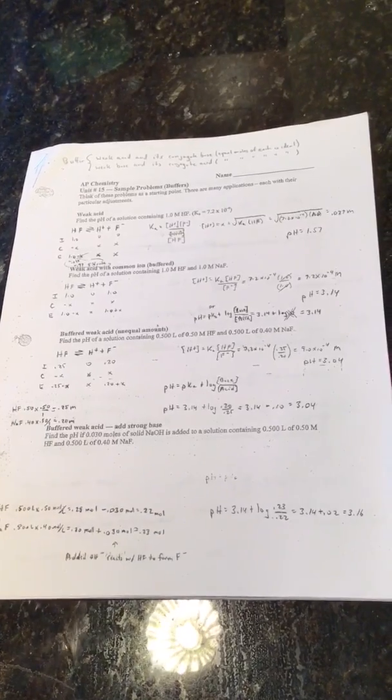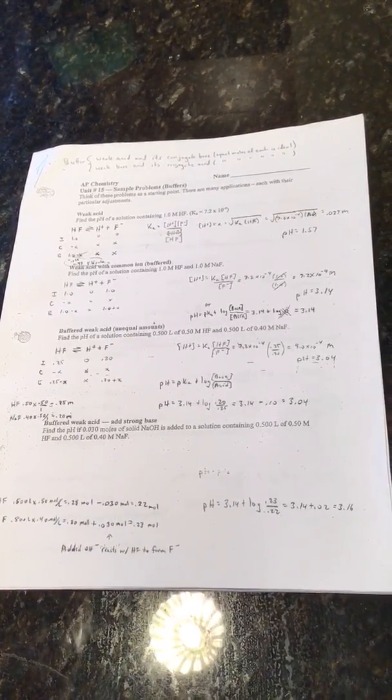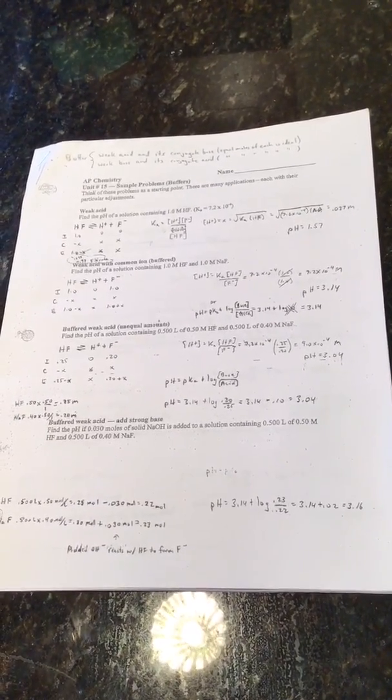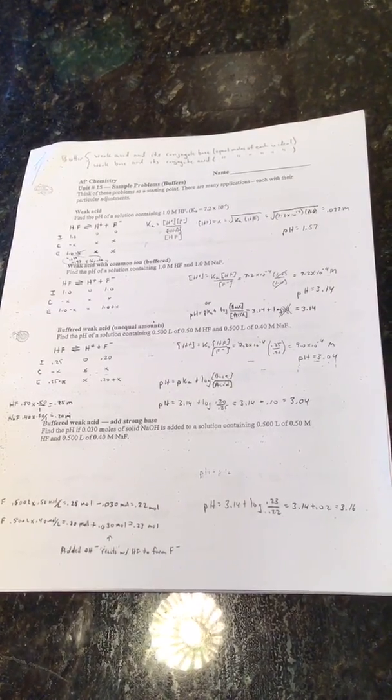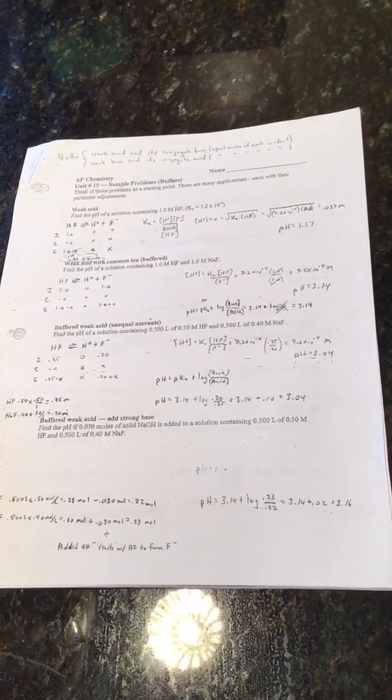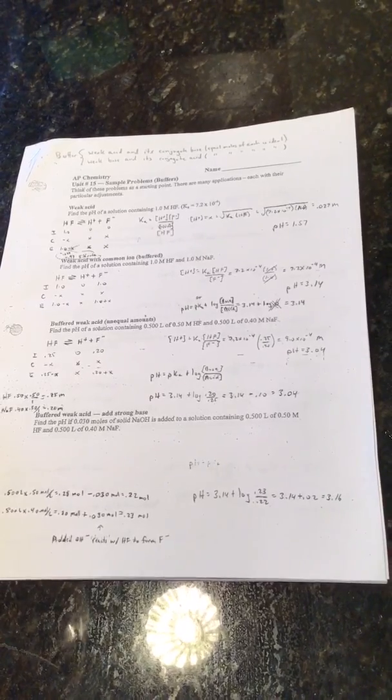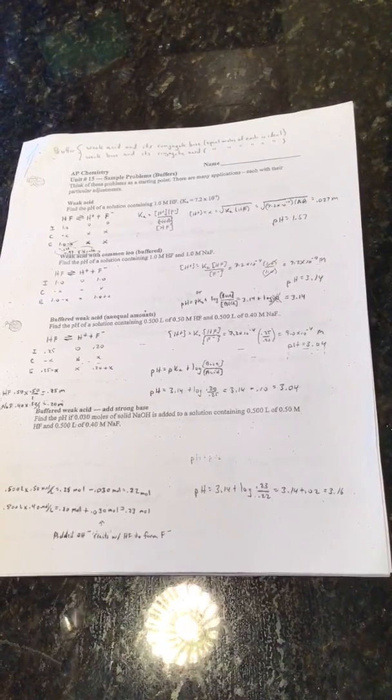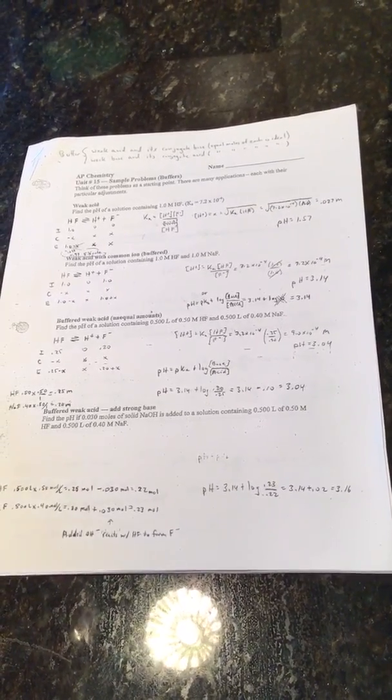Your blood is buffered. If you add a strong acid or strong base, it will not affect its pH much, assuming you don't exceed the buffering capacity, which we'll talk about in a bit.